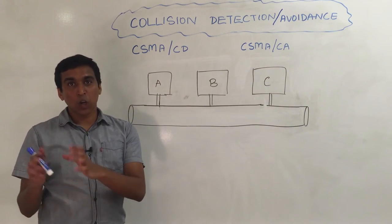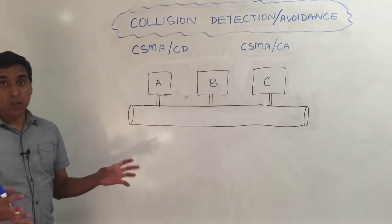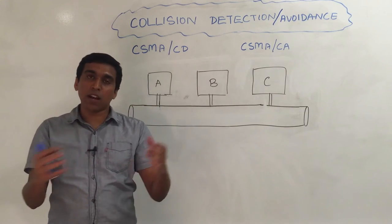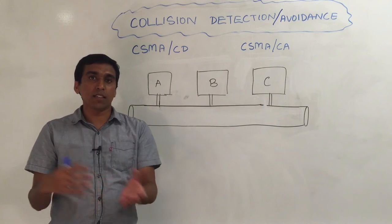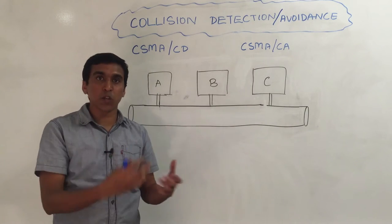In this video we are going to talk about collision detection and collision avoidance. Before we do that, let's imagine there's a room and there are three different people. When two people are talking, if the third person tries to talk, the conversation becomes difficult for the other two people.